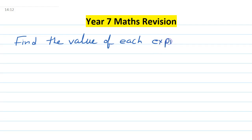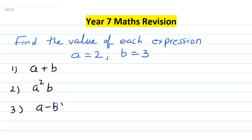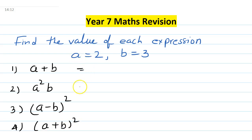So what does it mean? They will give you a couple of values: a is 2 and b is 3, and you need to find the value of: first, a plus b; second, a squared times b; third, (a minus b) whole square; and fourth, (a plus b) whole square.